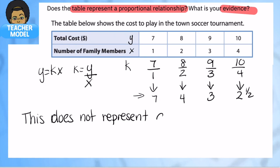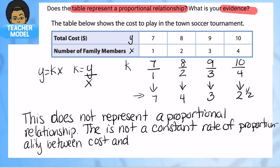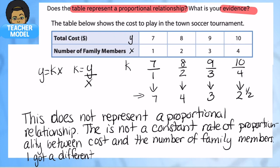So no, this does not represent a proportional relationship. There is not a constant rate of proportionality between cost and the number of family members. I got a different k for each set of values.